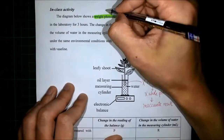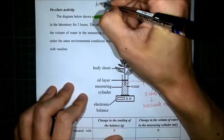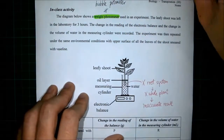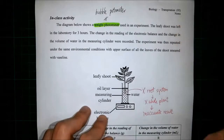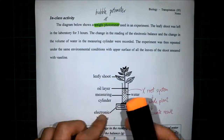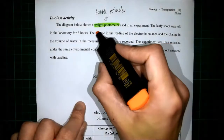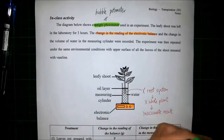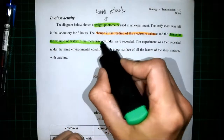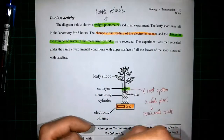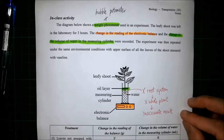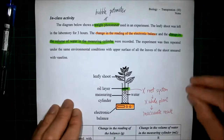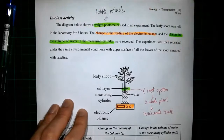This experiment uses the waste potometer, which is different from the bubble potometer. The waste potometer can give us two different results. The first result is the change in the reading of the electronic balance, and the second result is the change in the volume of water in the measuring cylinder — specifically, the change in the oil layer level.